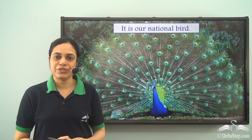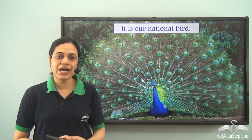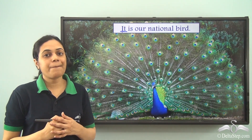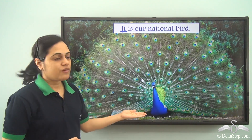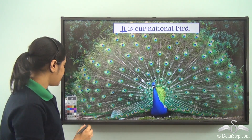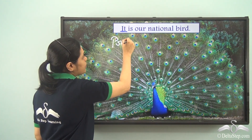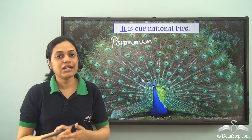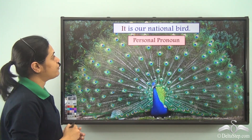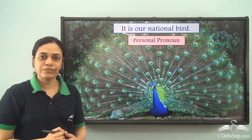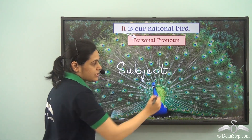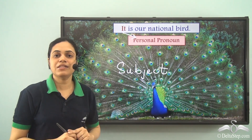Consider the sentence: 'It is our national bird.' What is the pronoun here and what is its type? The word 'it' replaces the noun 'peacock' — we want to say peacock is our national bird. So 'it' is a pronoun, coming in place of the name of an animal or a bird. It is a personal pronoun, and specifically a subject pronoun because it is the subject of the sentence.